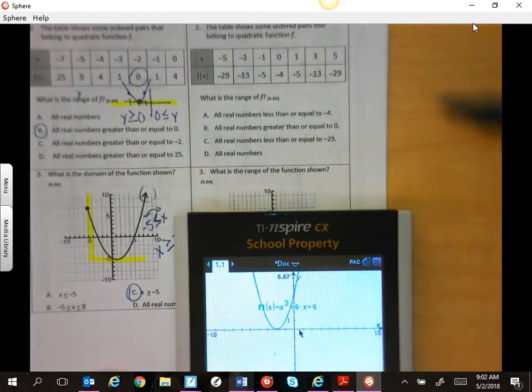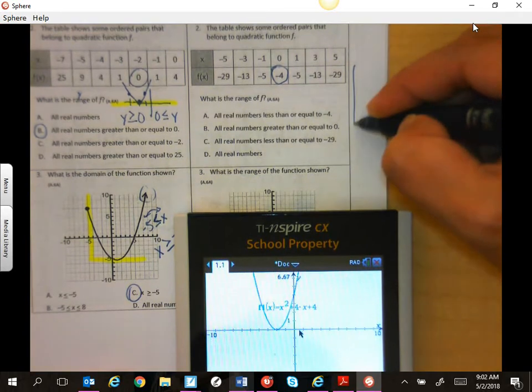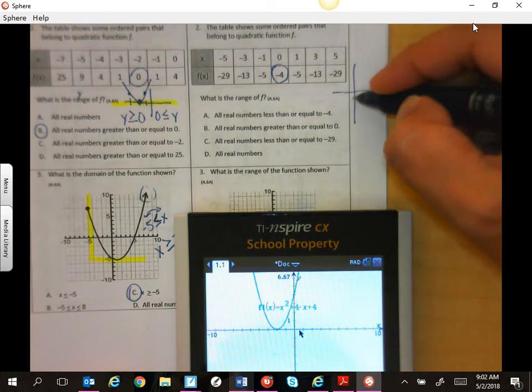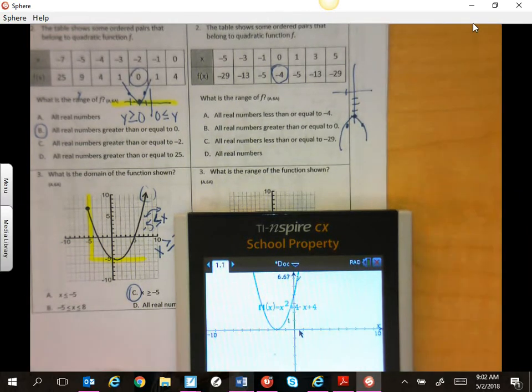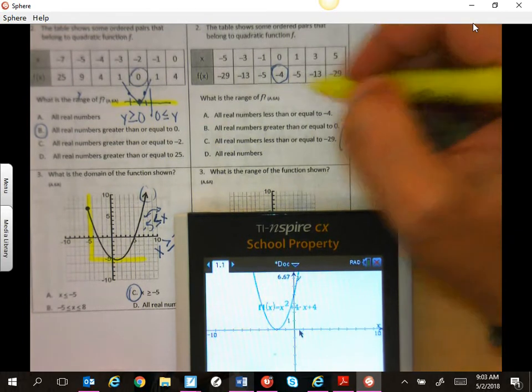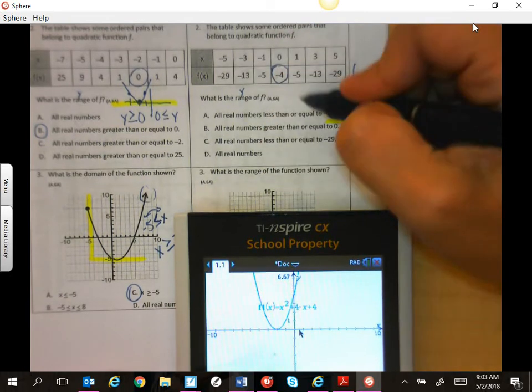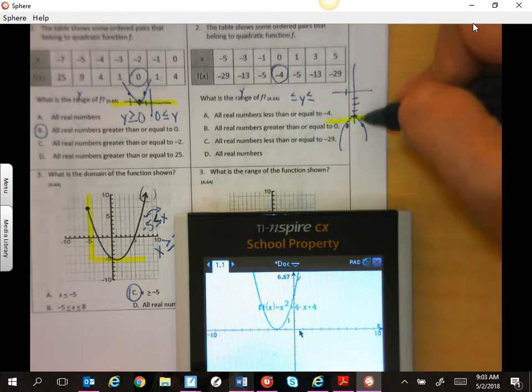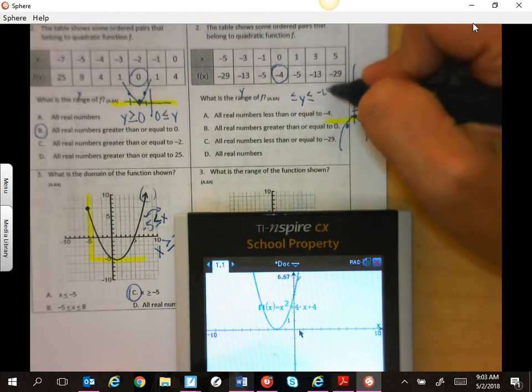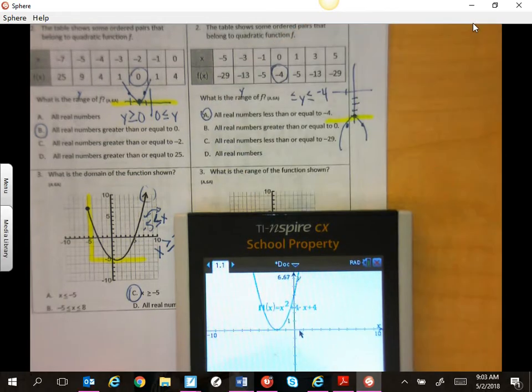This one, again, you can graph or you can sketch at zero, negative 4, and then everything else is over here. So when I do my window for this, and it's talking about range, which is y, we don't have a lower y value. But our highest y value is this negative 4. So everything is less than or equal to negative 4, which has to be a.